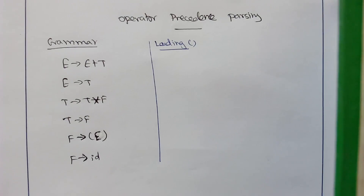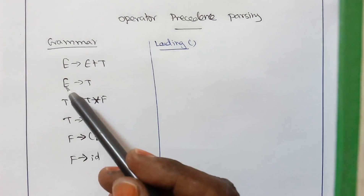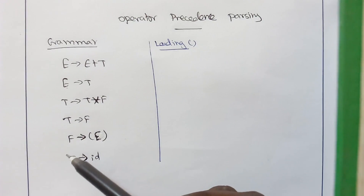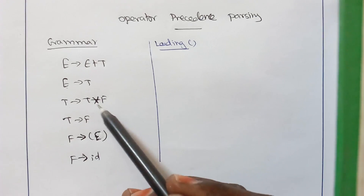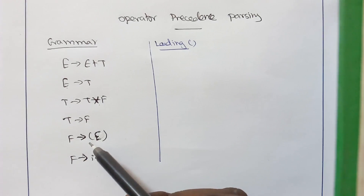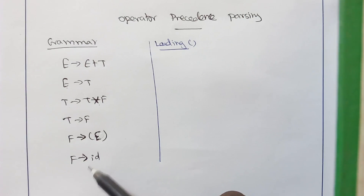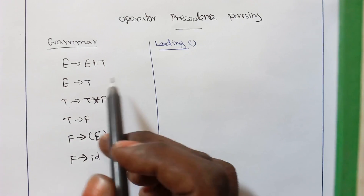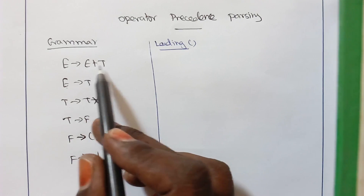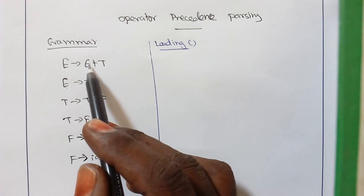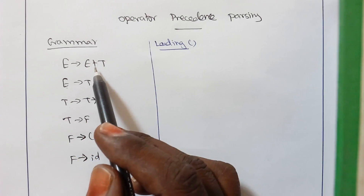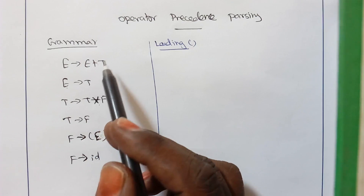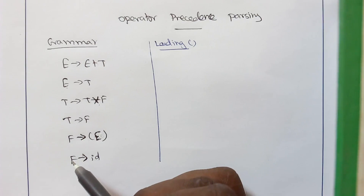Here is an example of an operator precedence parser where E, T, and F are the variables, and plus, star, open bracket, close bracket, and id are the terminal symbols. In the productions, nowhere do we have two variables that come together — they are always separated by a terminal symbol. So we call this grammar an operator grammar.